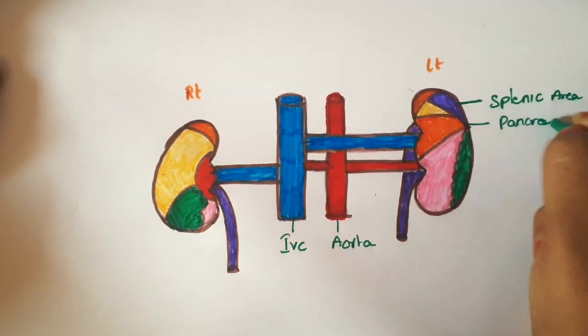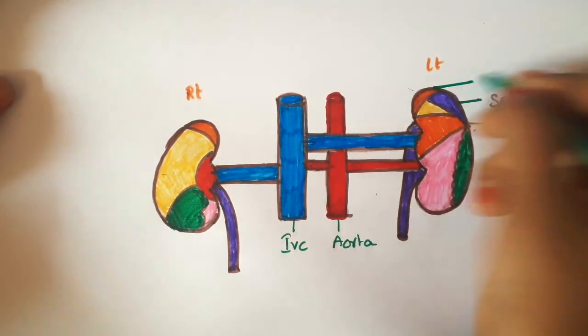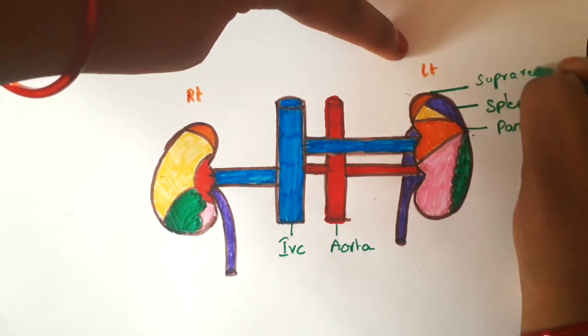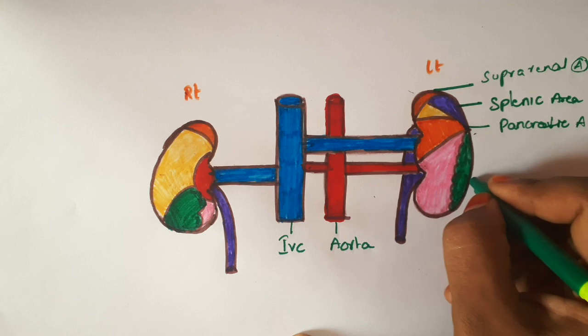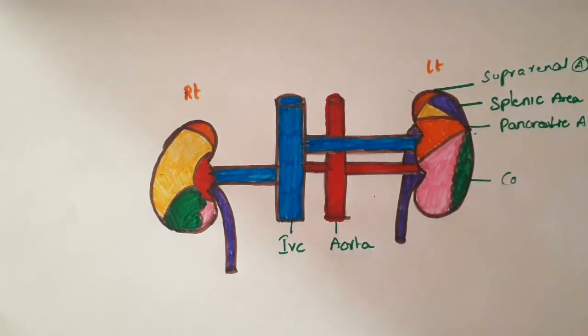Medial splenic area, pancreatic area. This is the suprarenal gland. Left suprarenal gland attachments, area for left suprarenal gland.